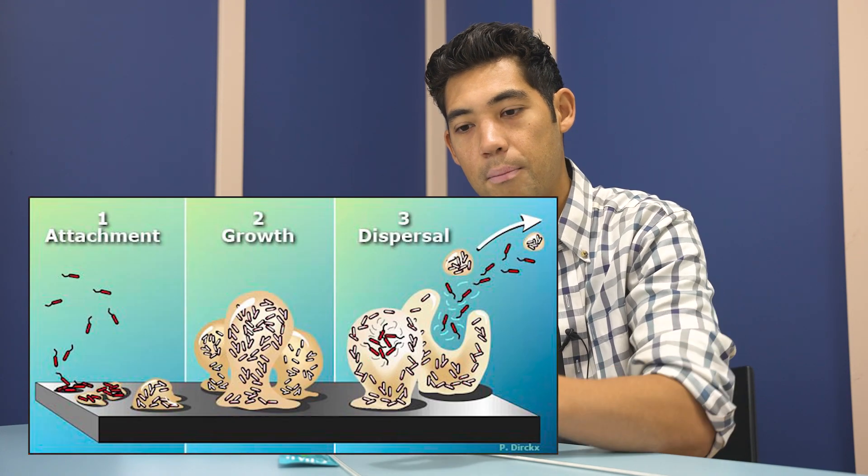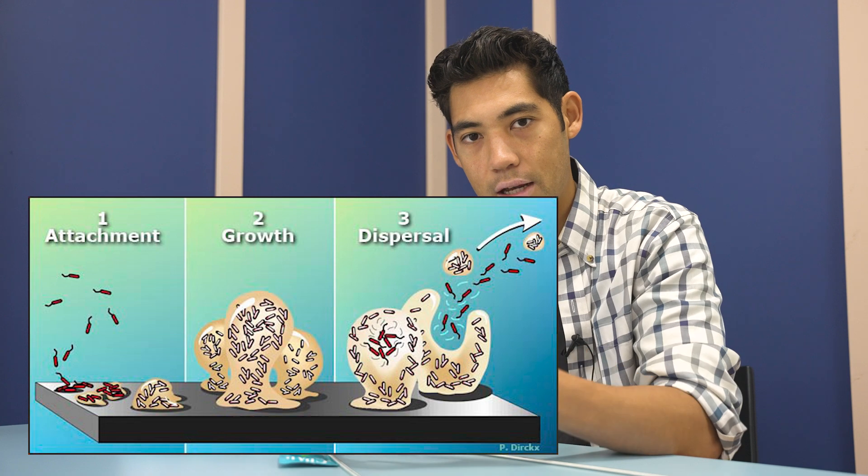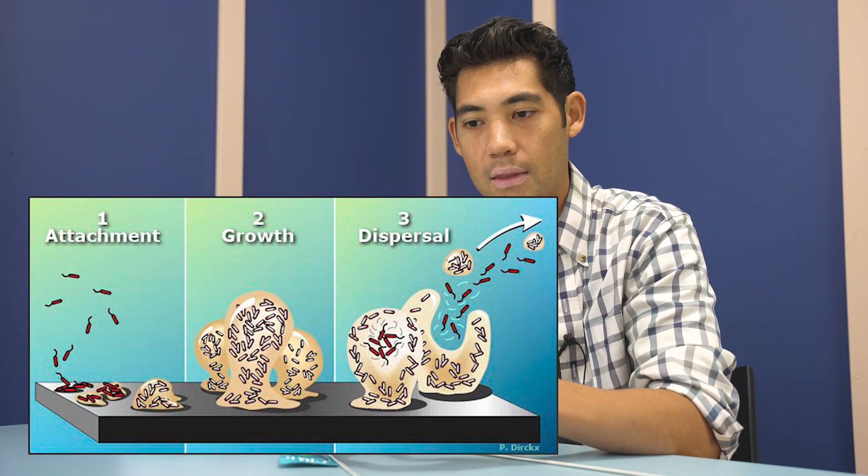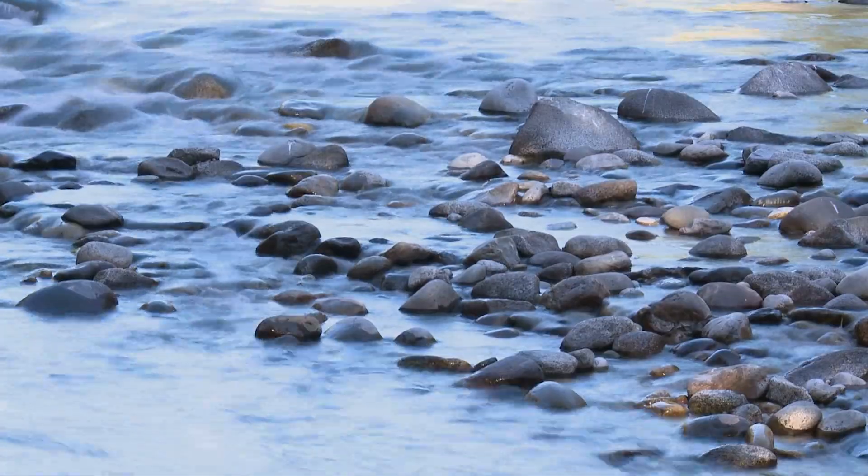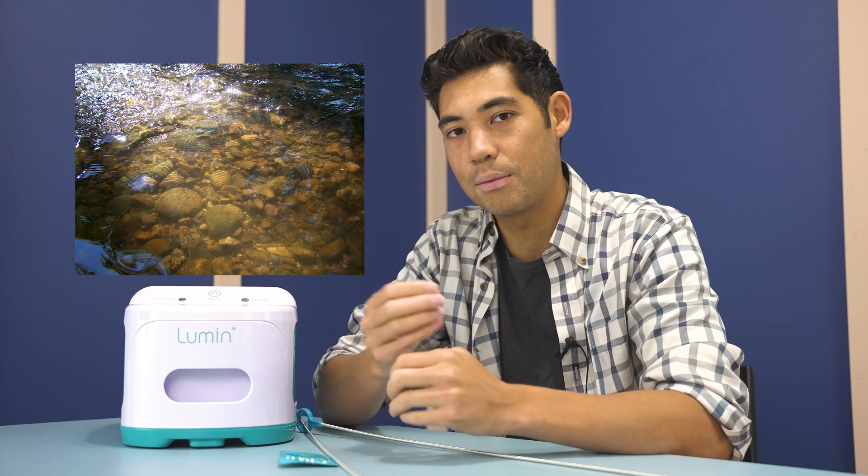Bacteria grows in places called biofilms. Biofilms are a collection or colony of bacteria, and they create a kind of protective housing so that they can live peacefully. There are examples of this all over the world. If you go to a riverbed, for example, you might pick up a rock and that rock might have a slippery sensation on it. That slippery mucous membrane is biofilm — it is a chemical that the bacteria are excreting that both glues them together and protects them from the outside elements.